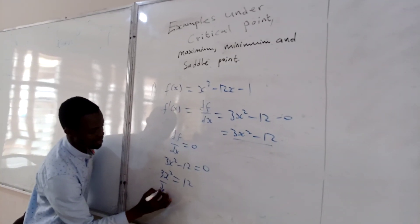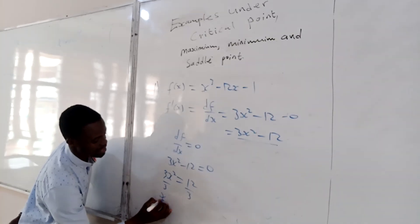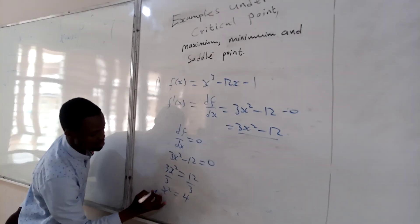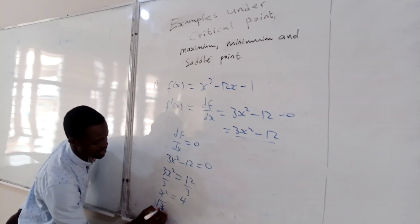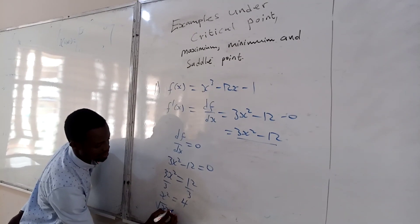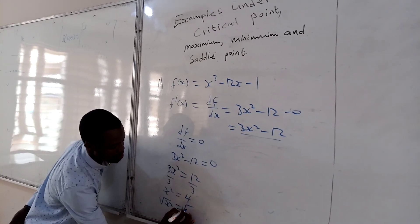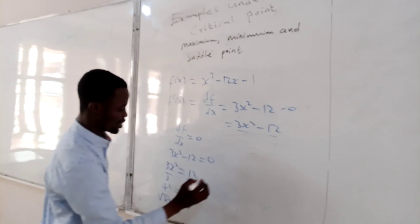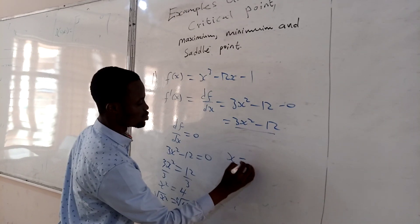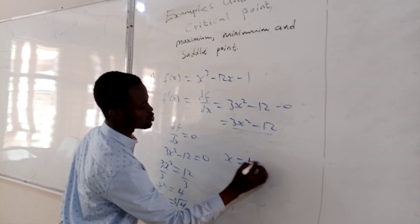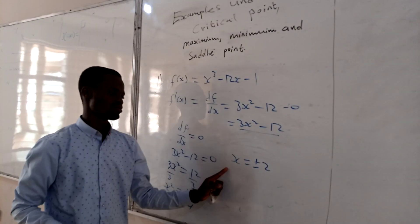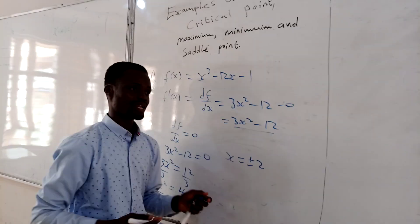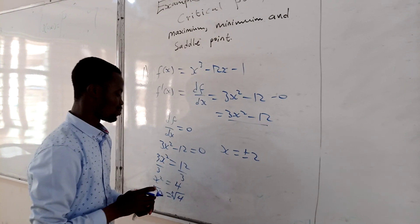We divide both sides by 3 to get x² equal to 4. Then we take the square root of both sides, giving plus or minus 2. So x equals plus or minus 2. This is your critical point: plus or minus 2.